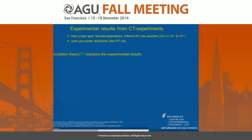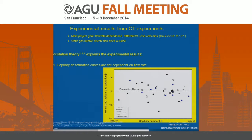We tried to understand our experimental results using percolation theory. The three classical papers we used were by Lenormand and Sarcona — still the best one for physical reasoning — the Wilkinson paper, and the paper by Blunt and Scheer. First, we wanted to understand the capillary desaturation curves.